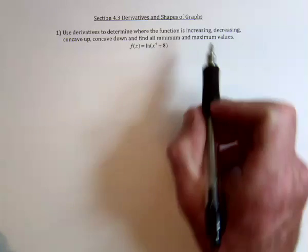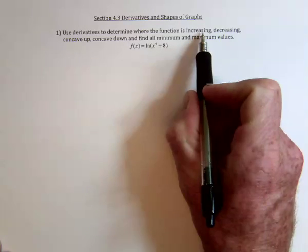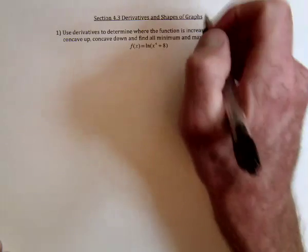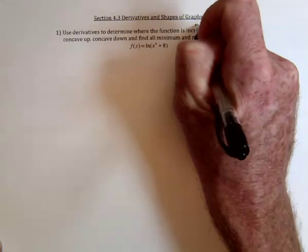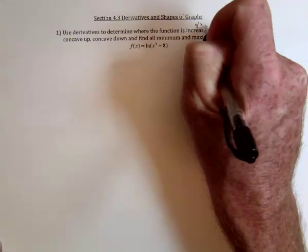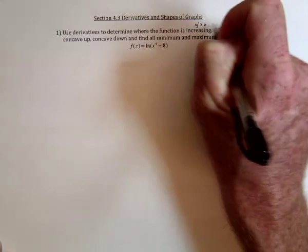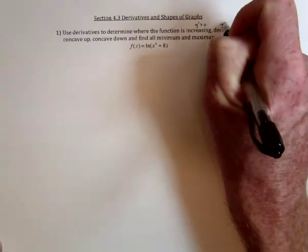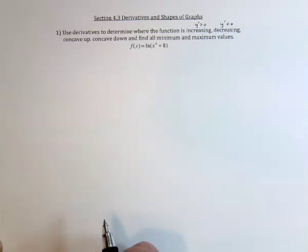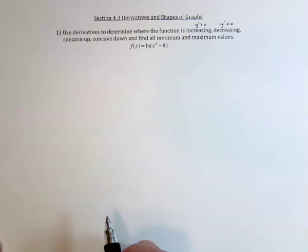To find out where the function is increasing or decreasing: increasing means that the slope of the tangent lines are going to be positive, and decreasing means the slope of the tangent lines is negative. So that's first derivative information.